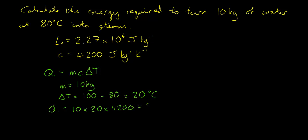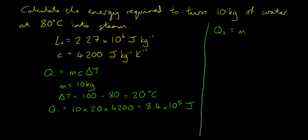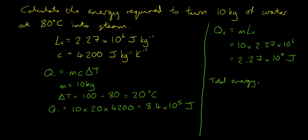That gives Q₁ = 8.4 × 10⁵ joules. For Q₂ — the energy to turn all of the 100°C water into 100°C steam — we use Q₂ = mL_v. With m = 10 kg and L_v = 2.27 × 10⁶ J/kg, Q₂ = 2.27 × 10⁷ joules. Finally, the total energy Q = Q₁ + Q₂ = 8.4 × 10⁵ + 2.27 × 10⁷ = 2.35 × 10⁷ joules.